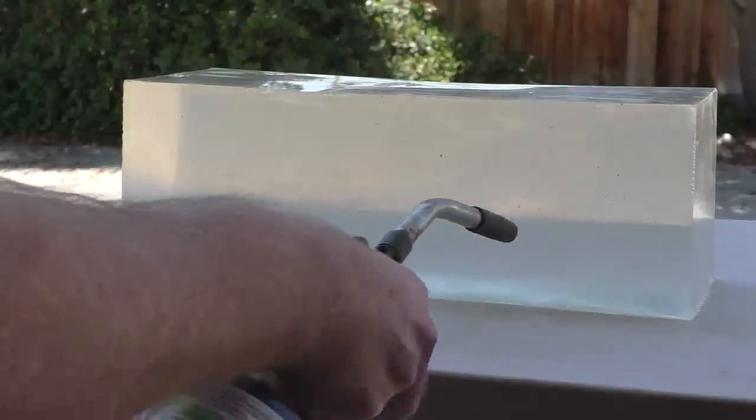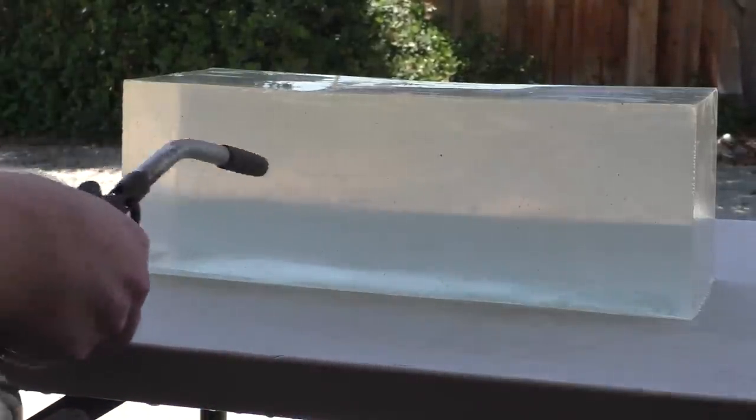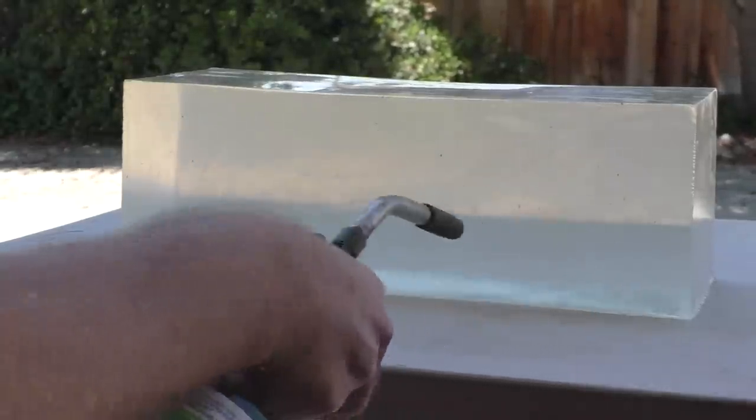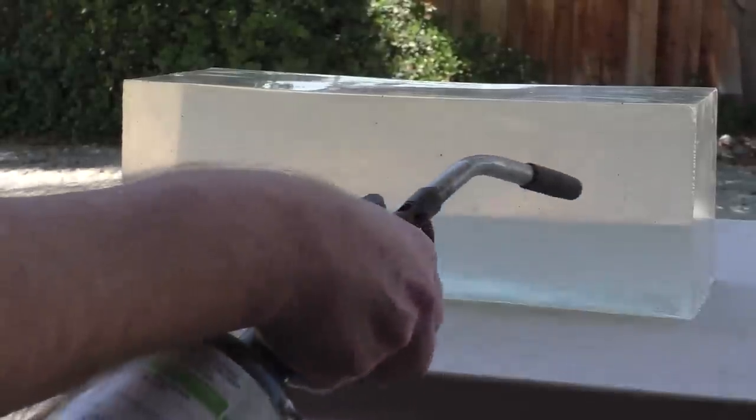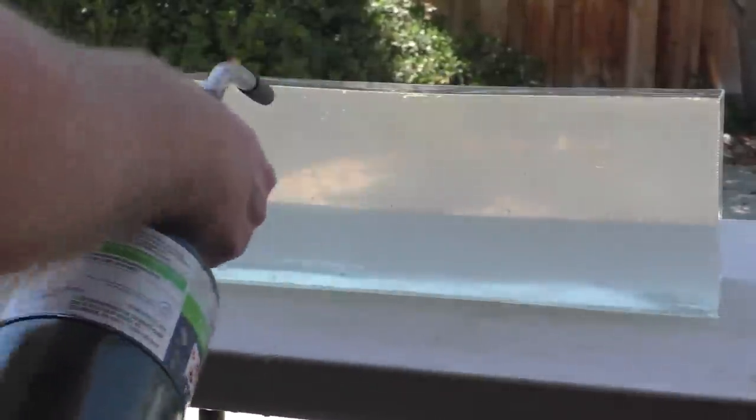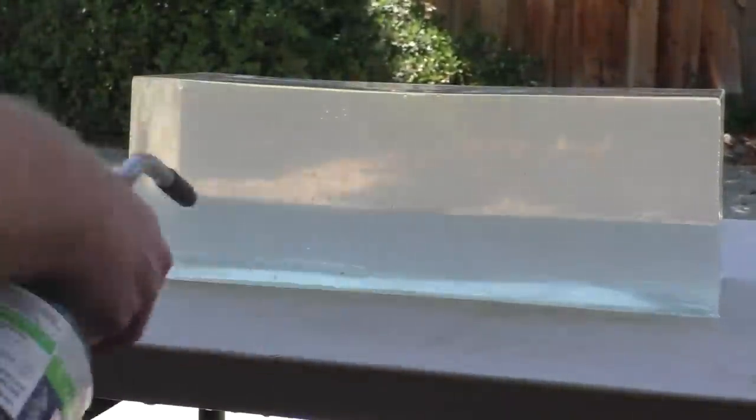When you remove the block from the mold, it has kind of a matte finish, so you can just dress it up using a hairdryer, but that's pretty weak. I also use a heat gun or a torch, and you can kind of gloss up the surface real quick. Preferably you want to do this right before you're ready to shoot it and film it.